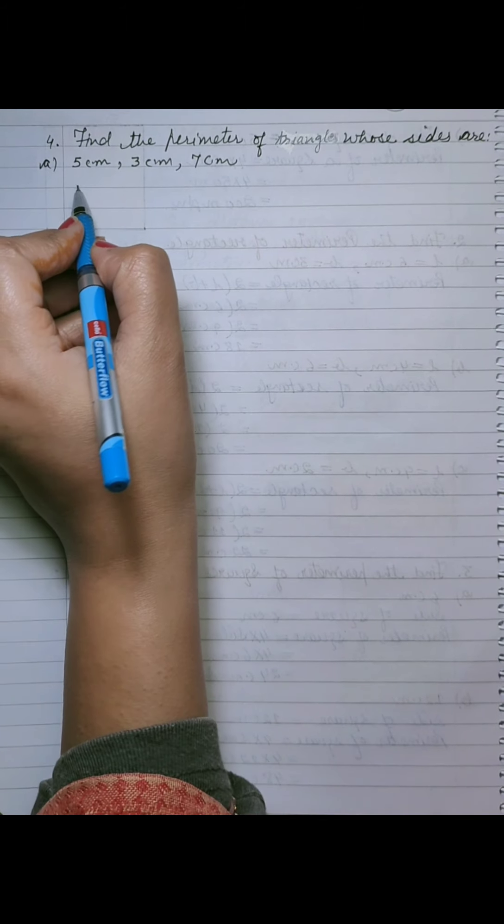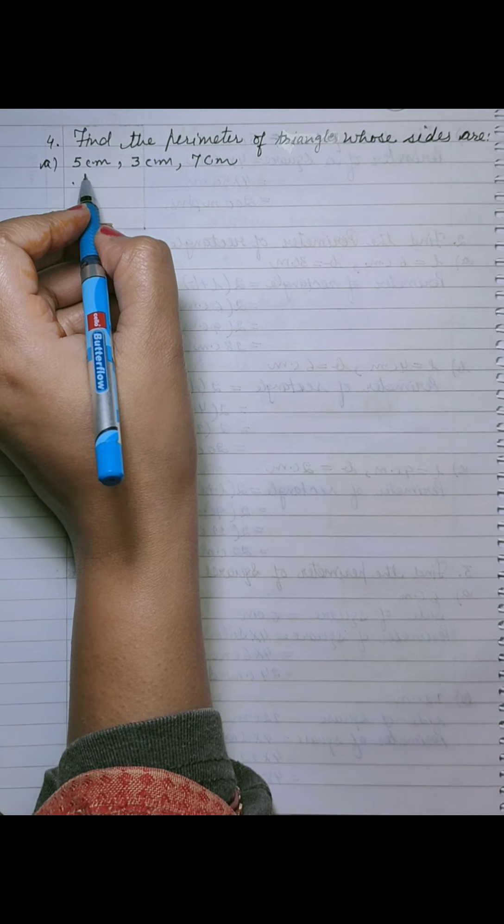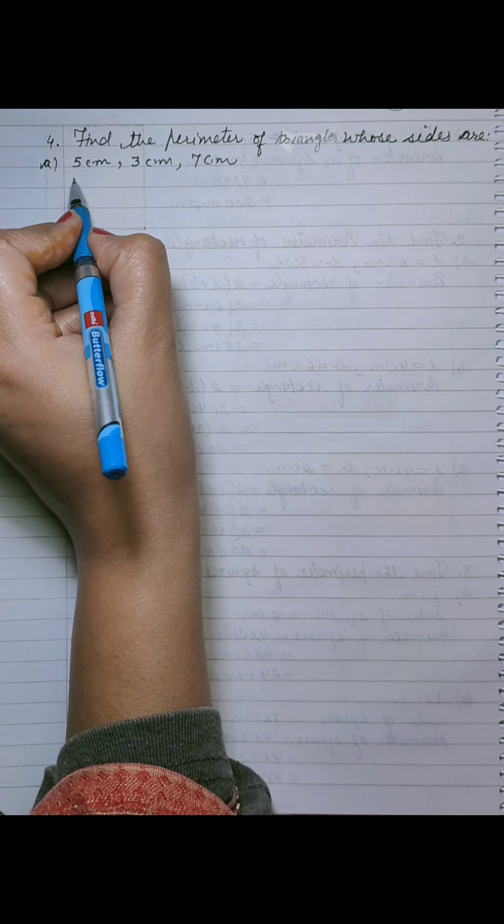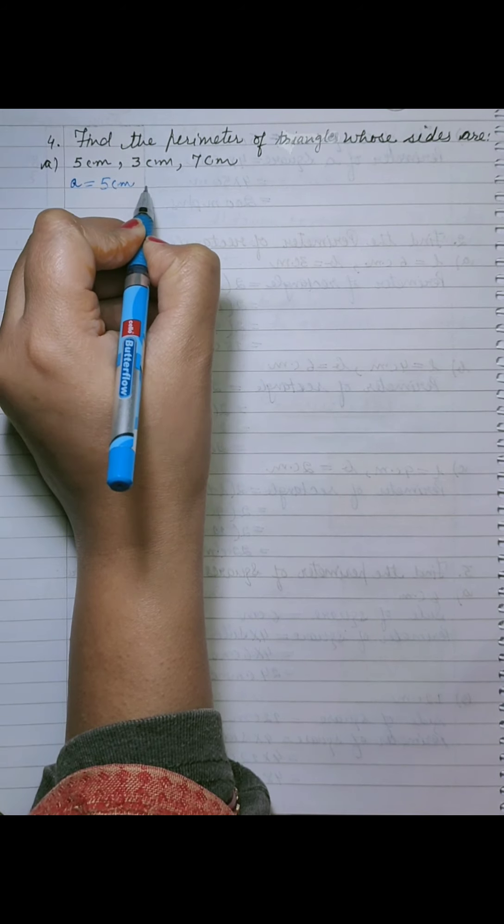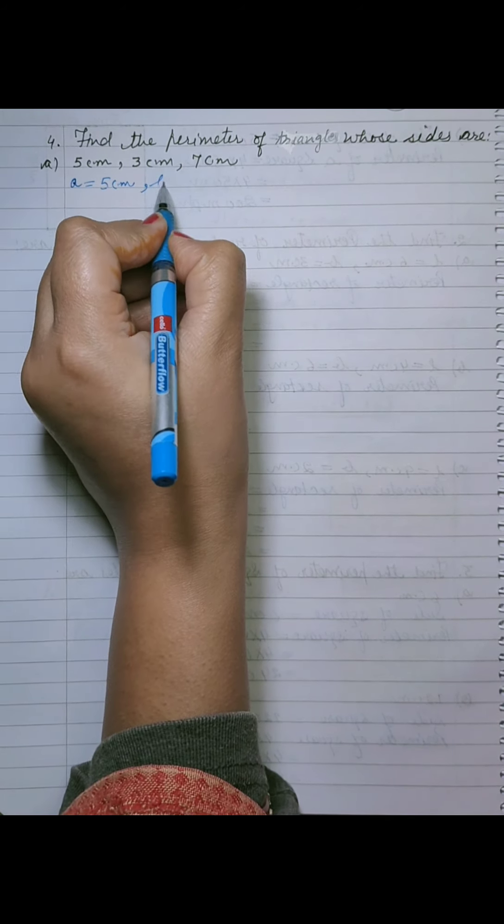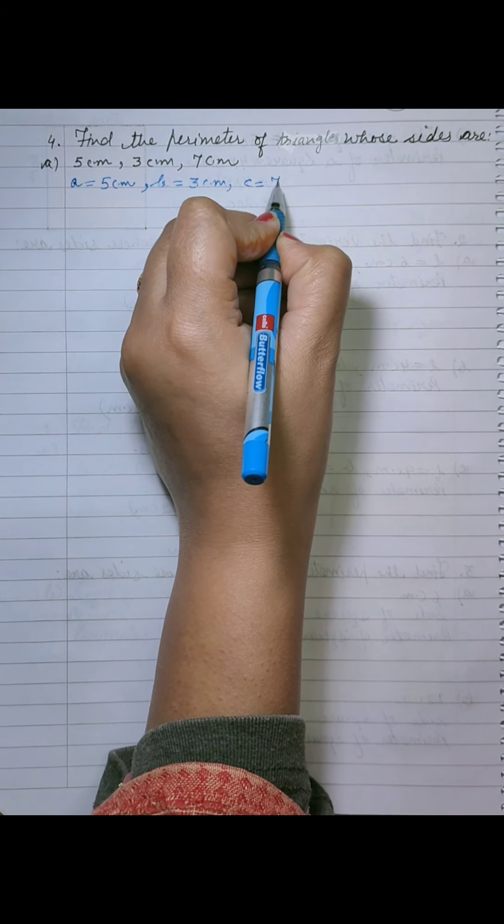So, these are side, side of triangle. Triangle ki 3 sides hoti hai. Yes, A, we will write A is equal to 5 cm. A, B, 2nd side and C, 3rd side. Right? So, I am going to name A, B, C ka name jo sides given thi.